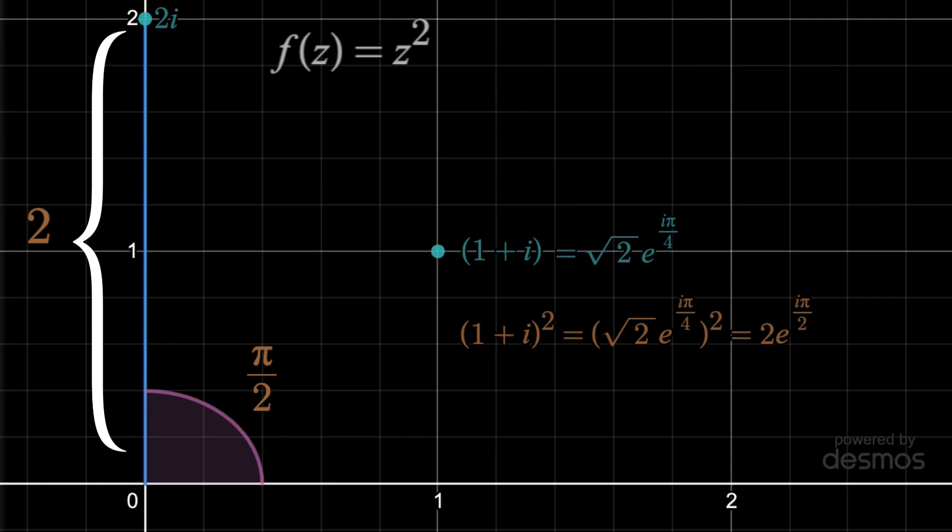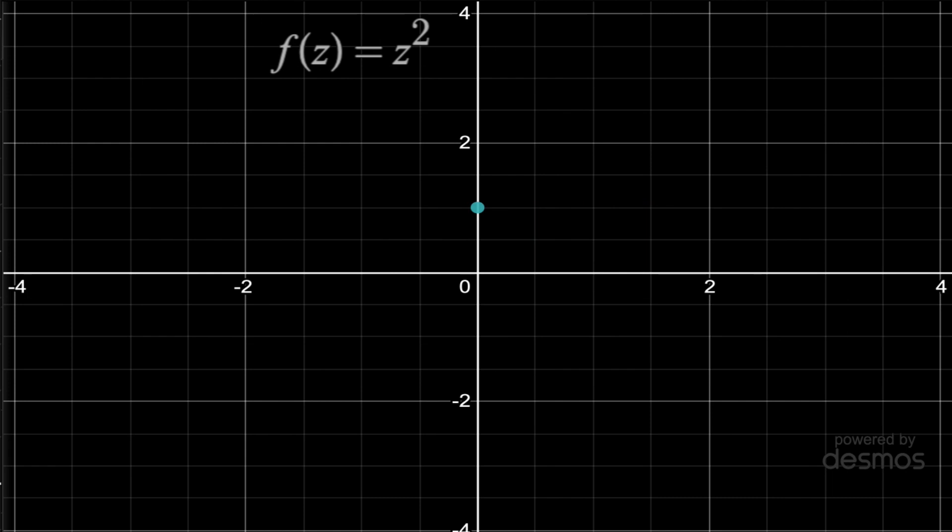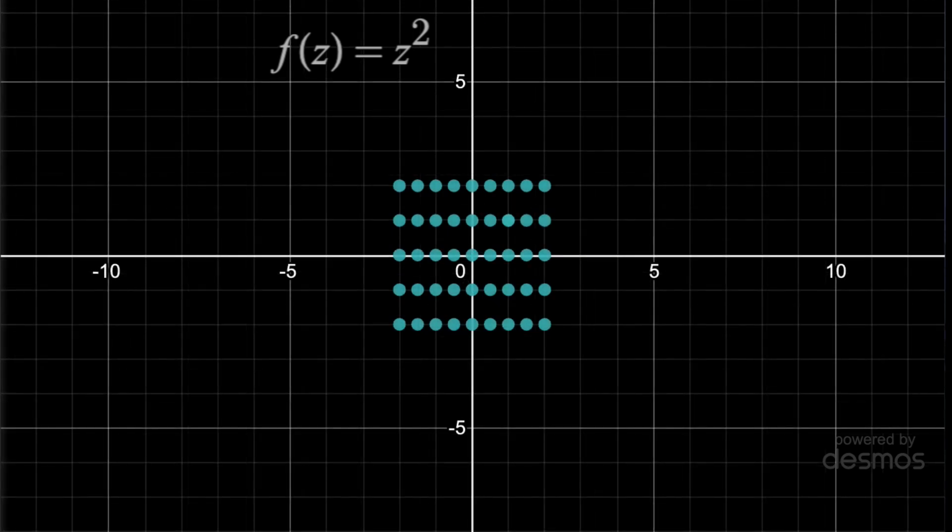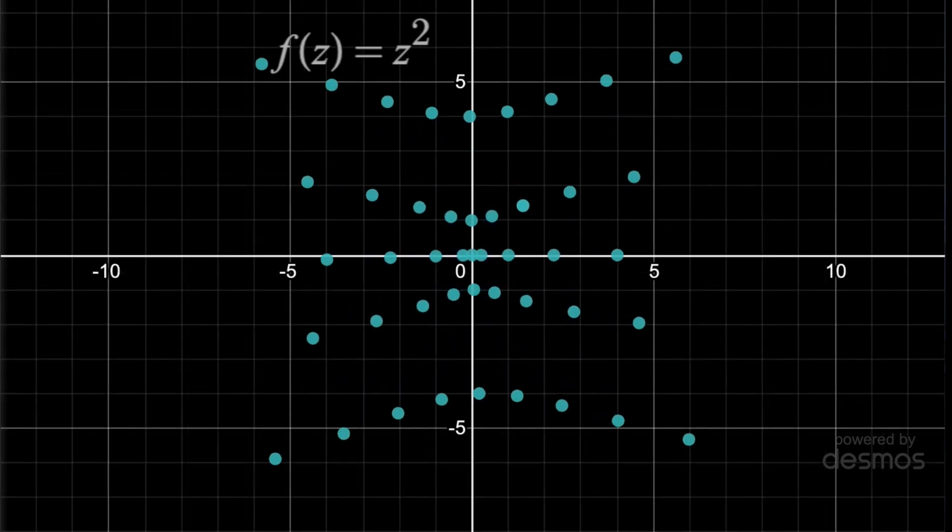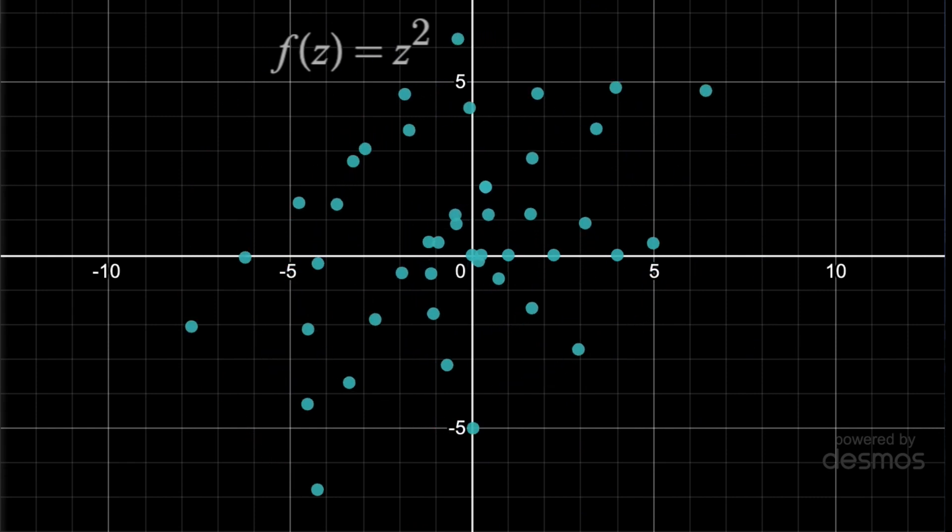And now you can visually find the square of any complex number. To find i squared we take that point i and square the magnitude which does nothing since it's 1 then double the phase to 180 degrees which tells us i squared is negative 1. For any points that lie on these lines x squared equals y squared once we square the distance from the origin and double the phase they all land on the imaginary axis like we saw. And here are just a bunch of other complex points where I'll square the amplitude and double the phase so you can see the transformations.